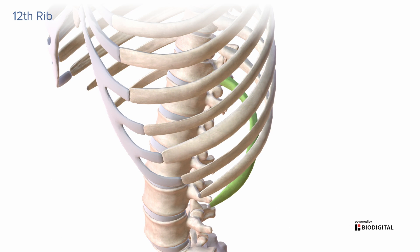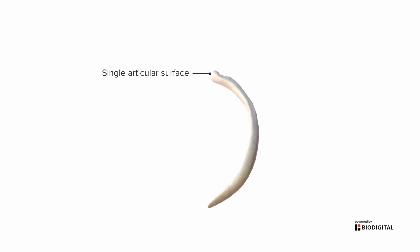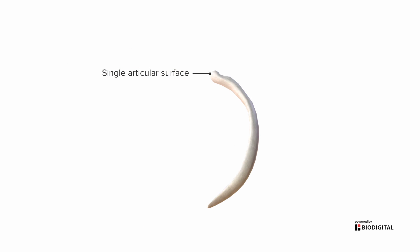The twelfth rib is unusual because it only has a single articular surface, articulating with the vertebra only at the head. This means it doesn't have other features like a neck, a tubercle, an angle, or even a costal groove.